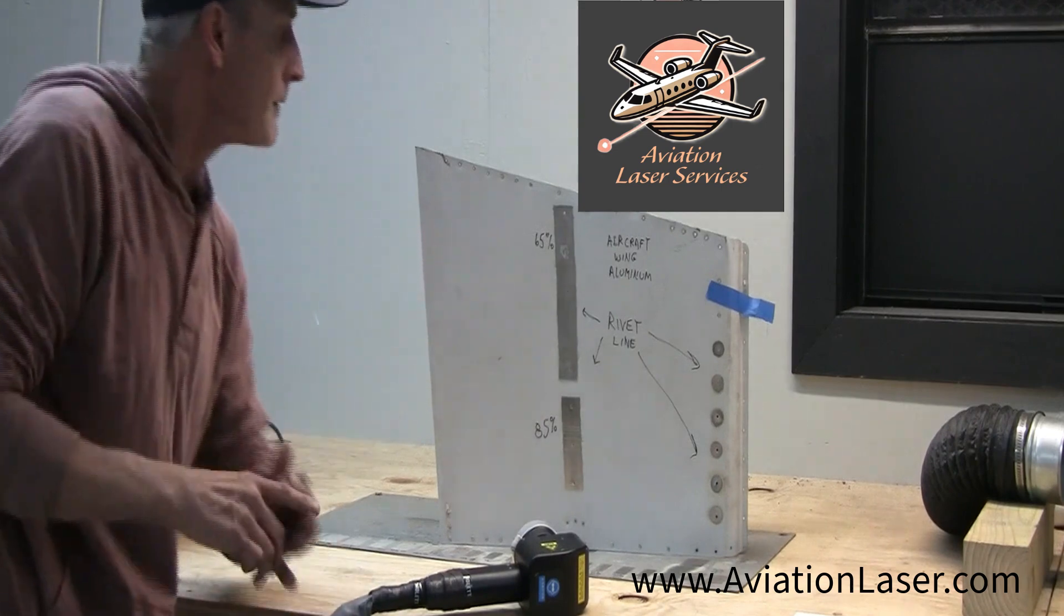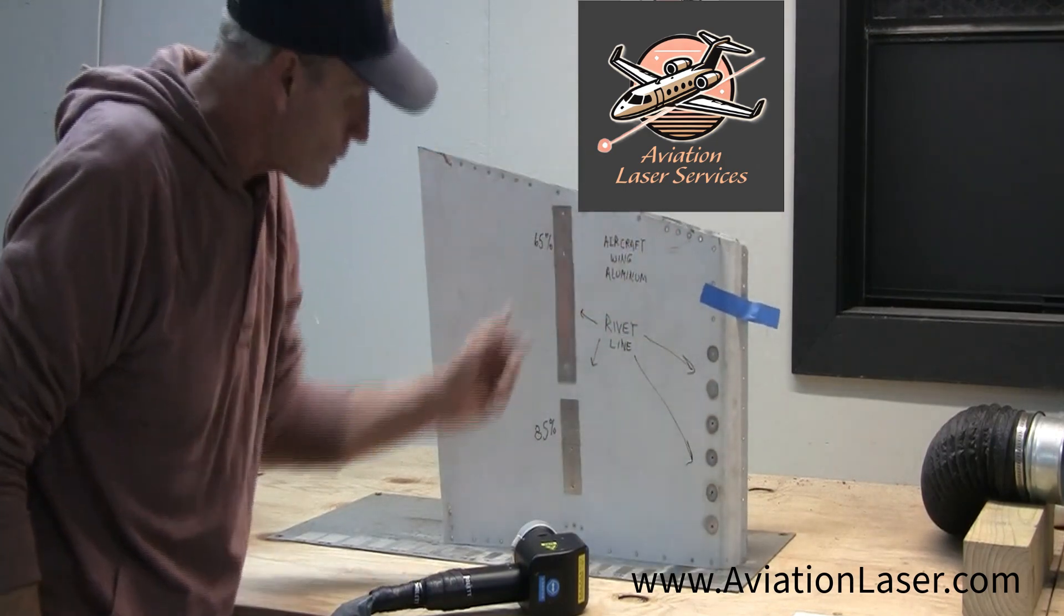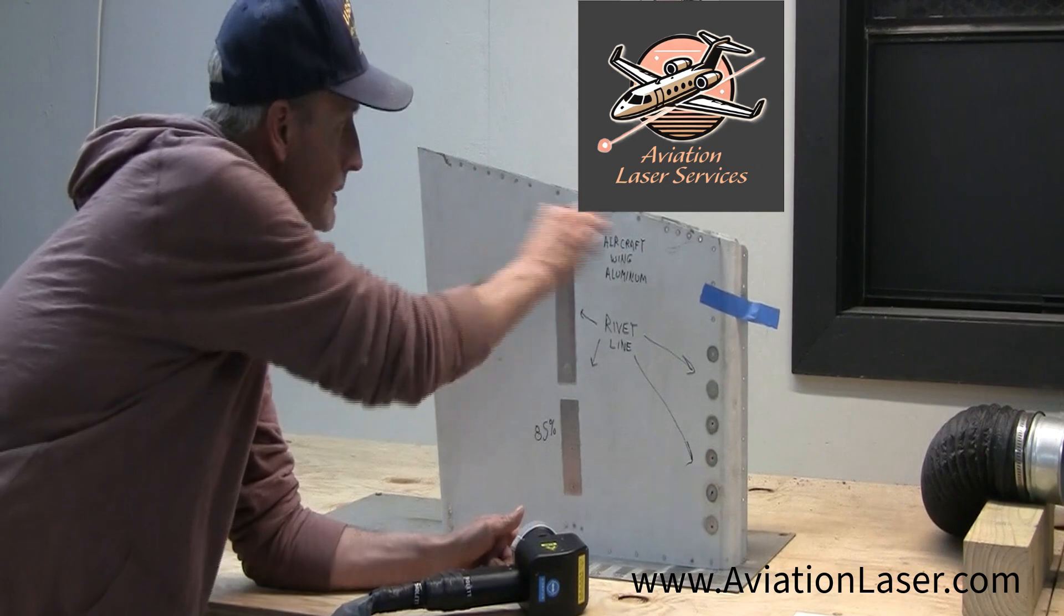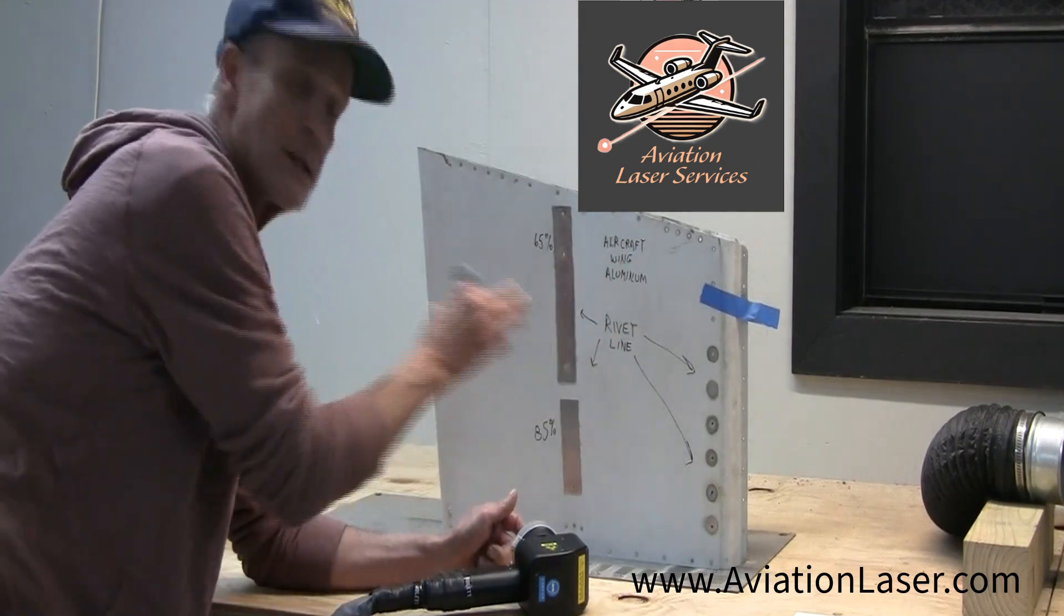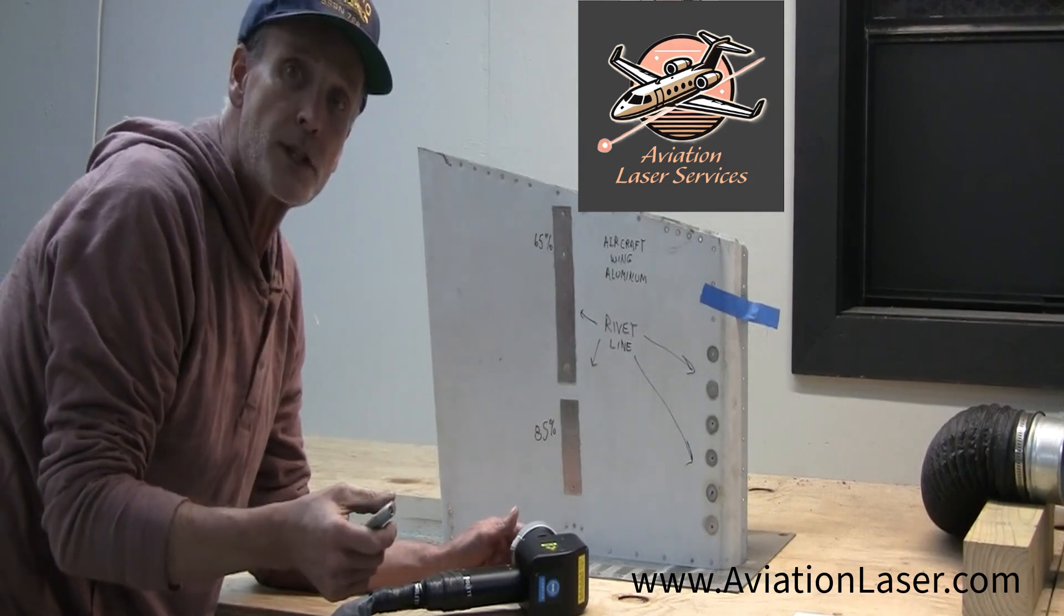This came from an aircraft - you can tell it's got the rivet line and everything around it, which is the difficult part of getting around, which is why I've been demoing on this piece.